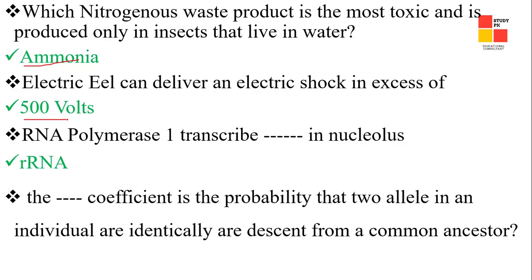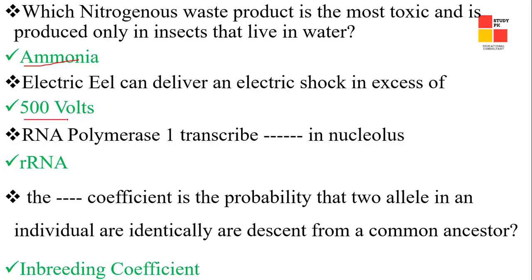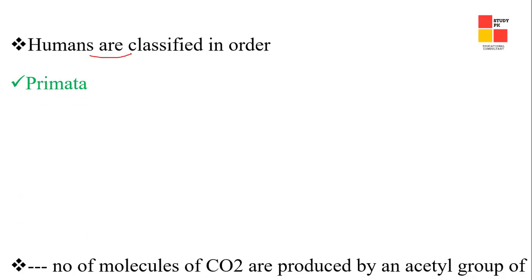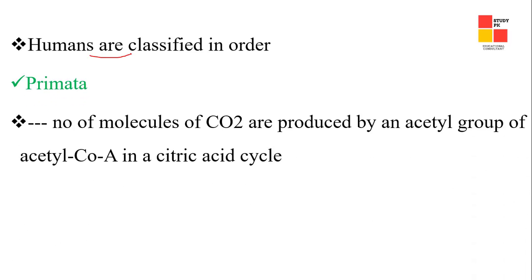Next one: the coefficient that is the probability that two alleles in an individual are identical by descent from a common ancestor is the inbreeding coefficient. Next one: humans are classified in the order Primates.